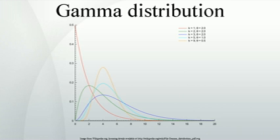Gamma distribution. In probability theory and statistics, the gamma distribution is a two-parameter family of continuous probability distributions. The common exponential distribution and chi-squared distribution are special cases of the gamma distribution.